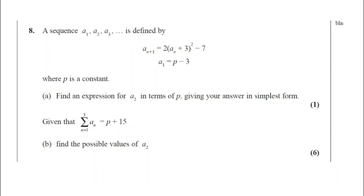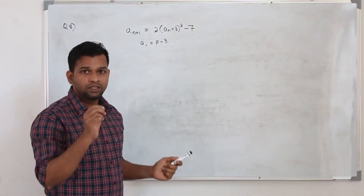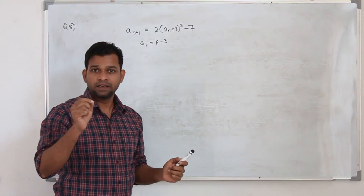Question number 8. A sequence a₁, a₂, a₃ is defined by aₙ₊₁ = 2(aₙ + 3)² − 7, with a₁ = p − 3 where p is a constant. Part A: find an expression for a₂ in terms of p in its simplest form. The question carries 1 mark. They want you to find a₂ in terms of p.